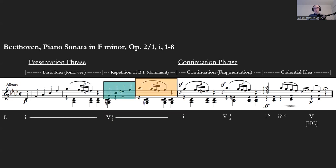Then we have our continuation. In this case, you notice the harmony is moving a little bit faster—we now have one chord per bar instead of two chords. We're going to take just the second half of our motive and repeat it, so we're fragmenting our basic idea.